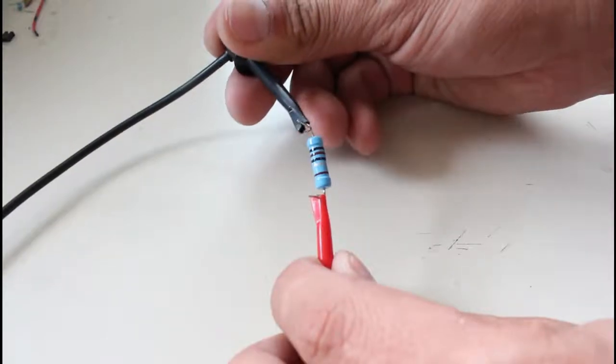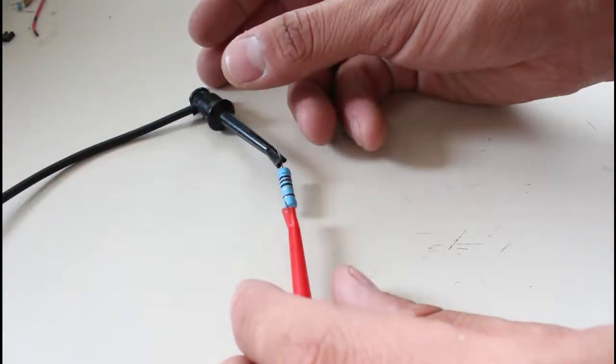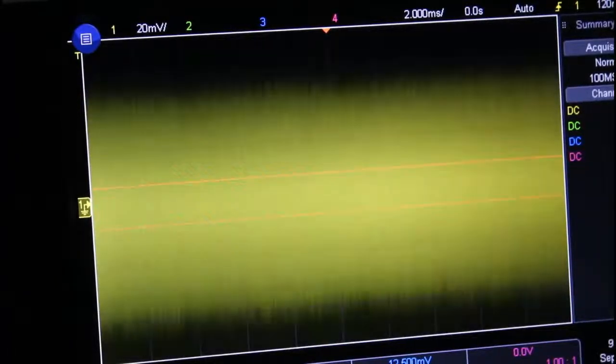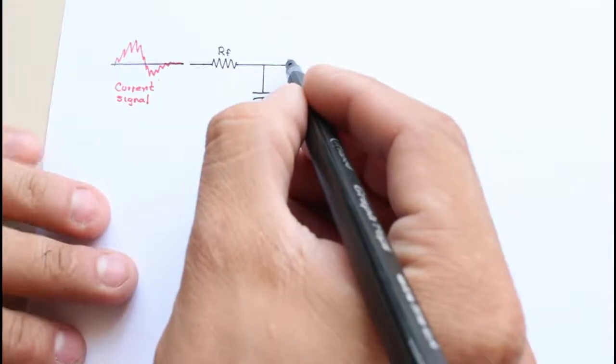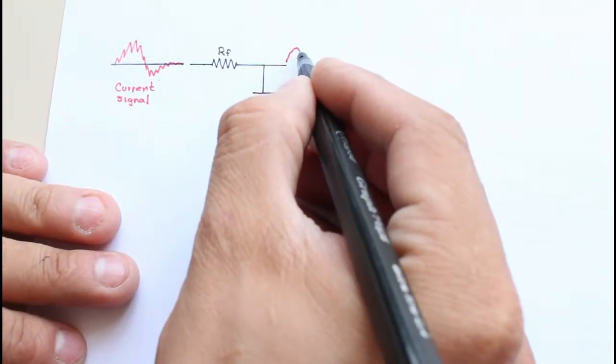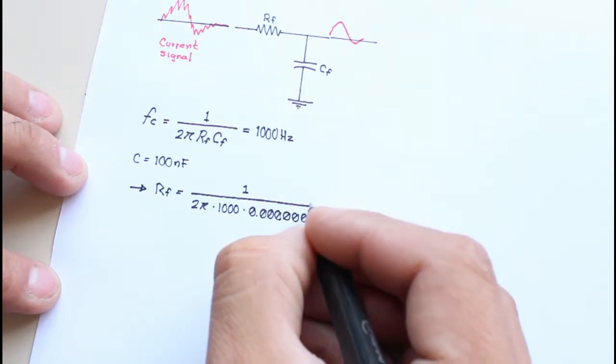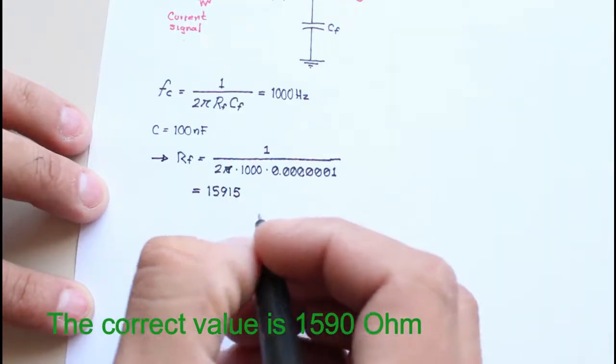But when I connect the shunt to my power supply with the current limited to 1A, the voltage drop is around 200 mV. Given that the current is a noisy signal, I have to use an active low-pass filter whose cut-off frequency is 1 kHz. By using a 100 nF capacitor, the resultant resistor is 1.5 kOhm.